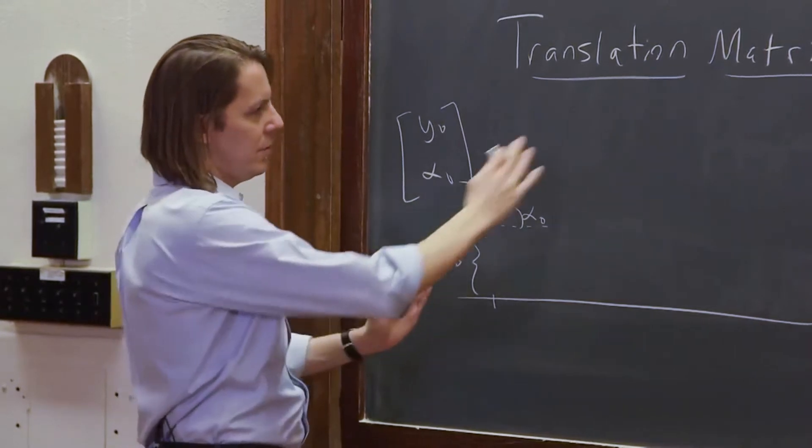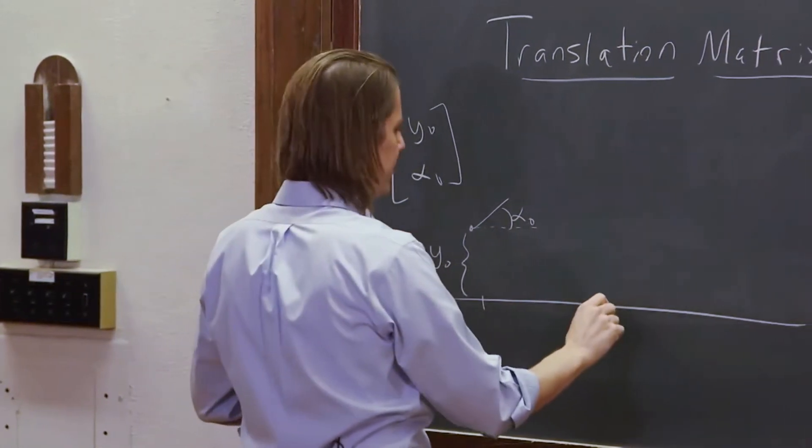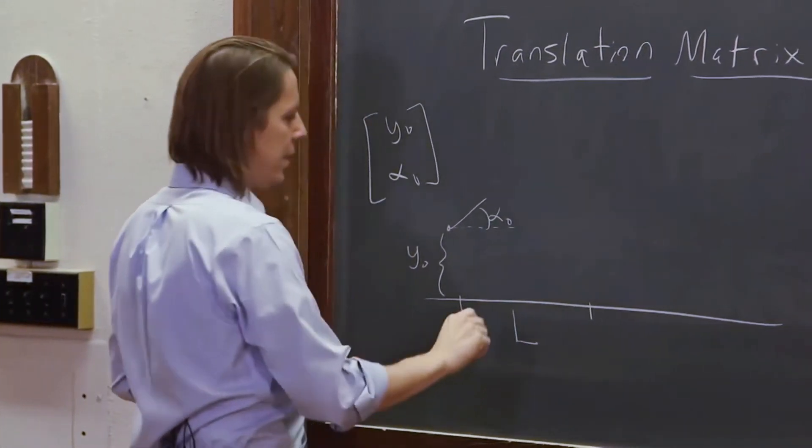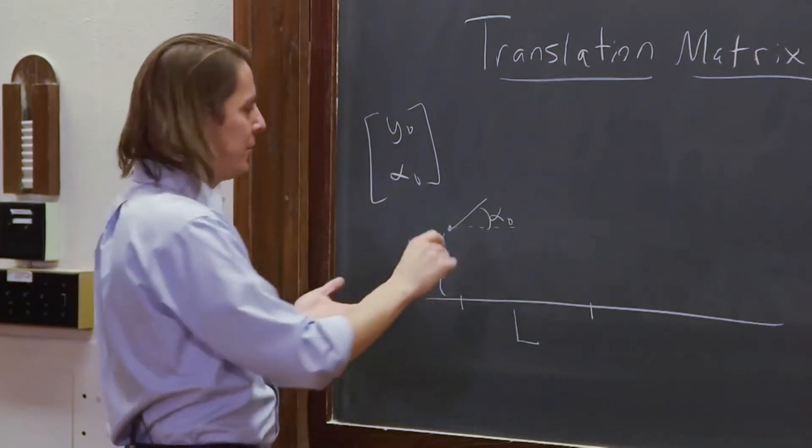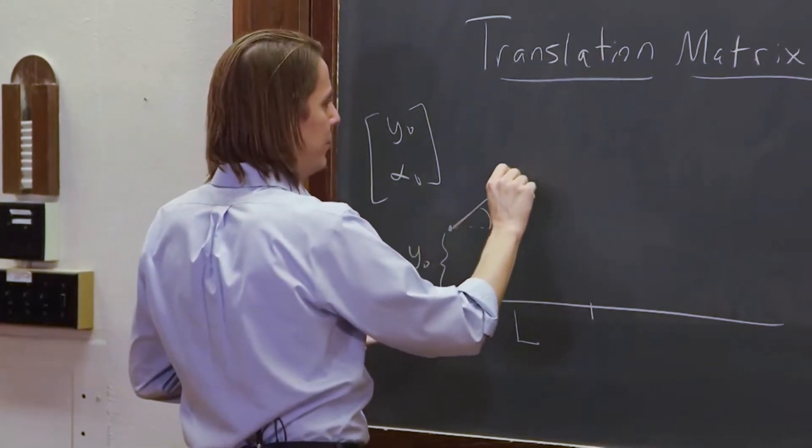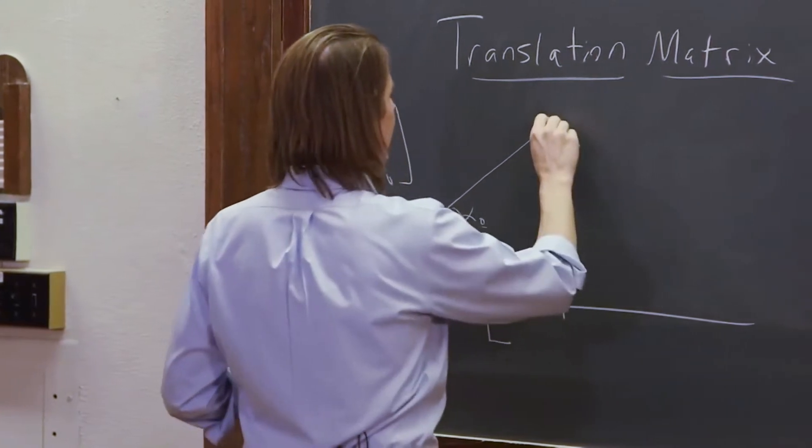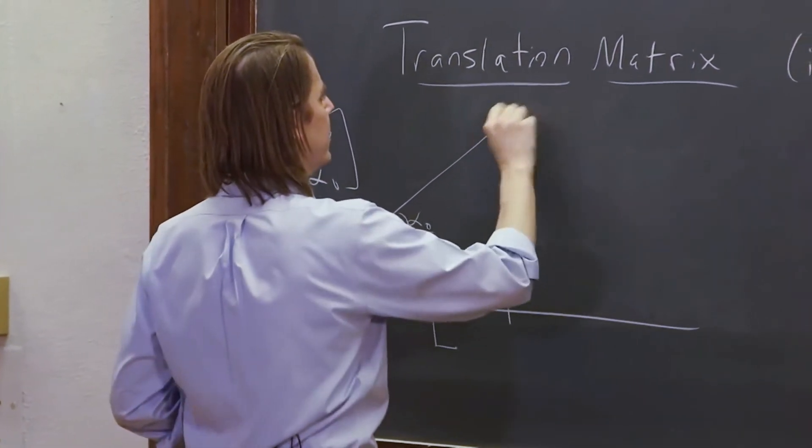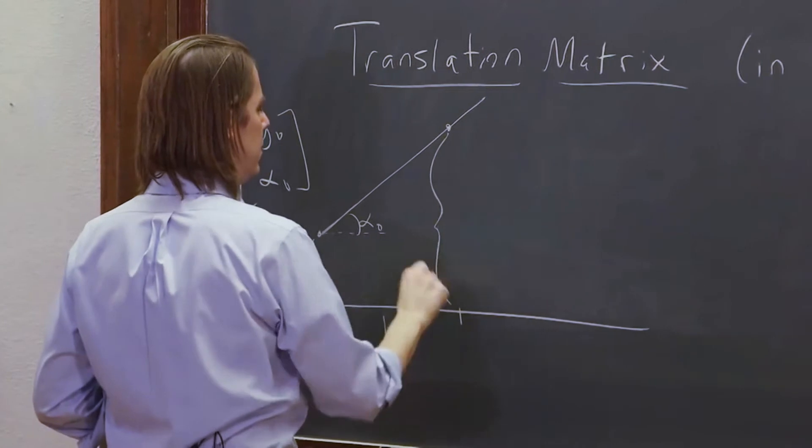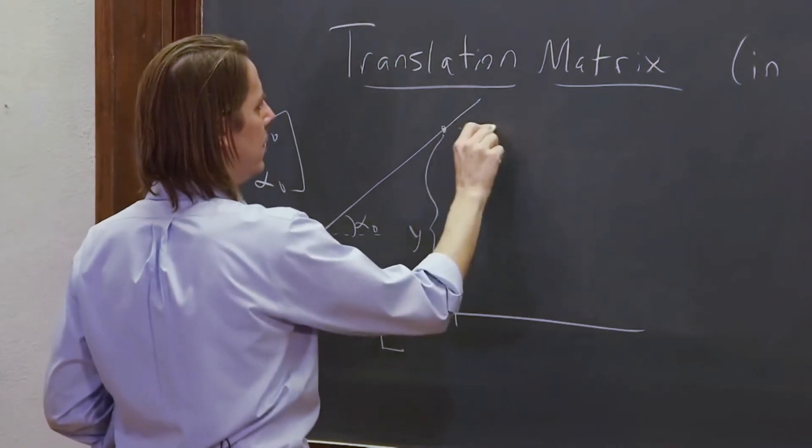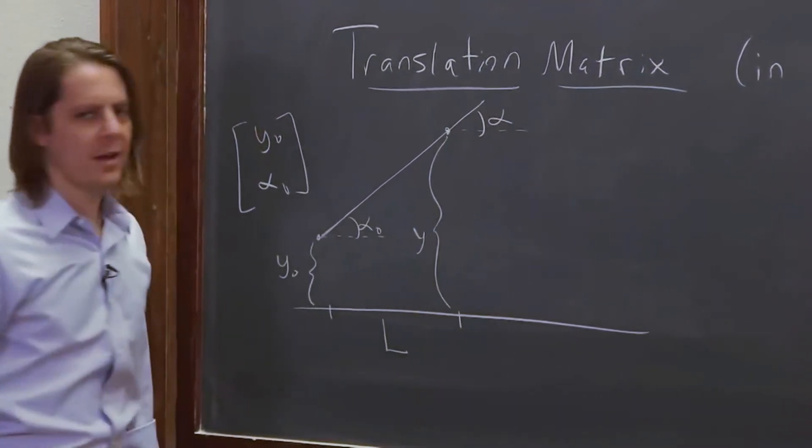But now what we want to do is let it translate, let it propagate a distance L. So, well, geometrically, we know what's going to happen is we just draw the line. We know the light moves in a straight line. And we think about what is it doing here? Well, here, it is at this height and it's at that angle.